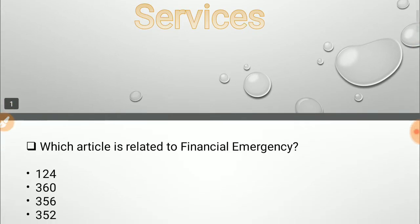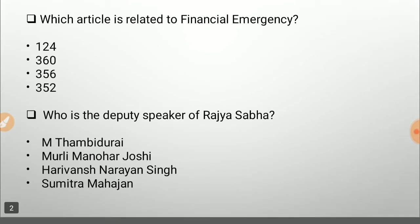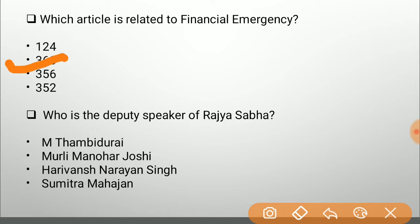The first question: which article is related to financial emergency? Options are Article 124, Article 360, Article 356, and Article 352. Article 124 is related to the Supreme Court of India. Article 360 is related to financial emergency — that is our answer. Article 356 is related to state emergency, and Article 352 is related to national emergency.